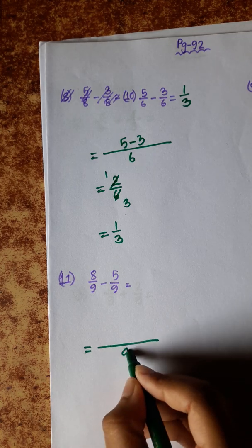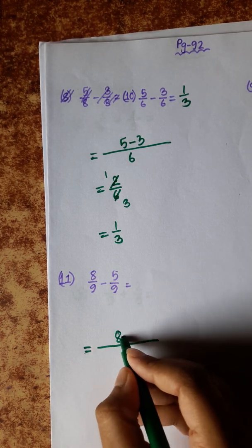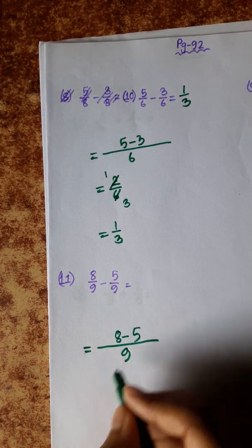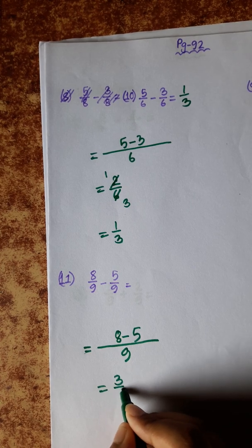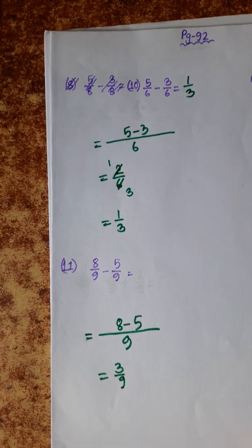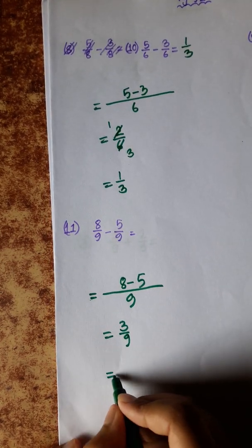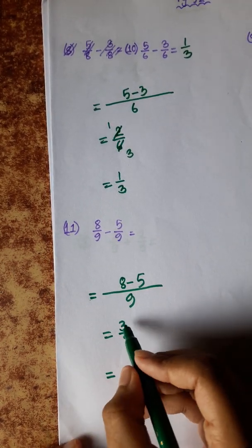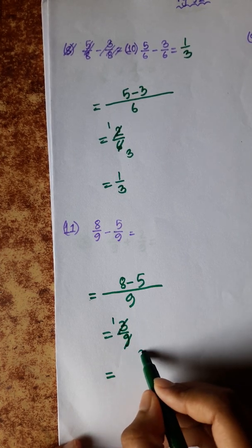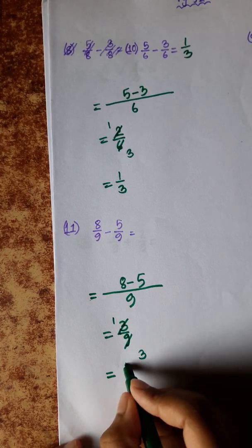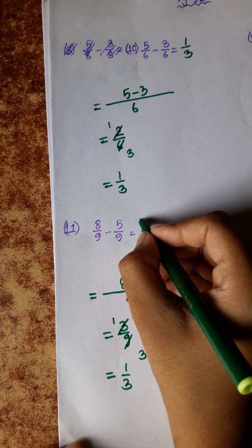Next: denominator 9. 8 minus 5 equals 3. This can be simplified by dividing by 3: 3 divided by 3 equals 1, and 9 divided by 3 equals 3. So the answer is 1 by 3.